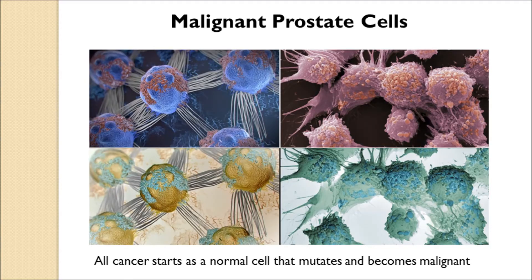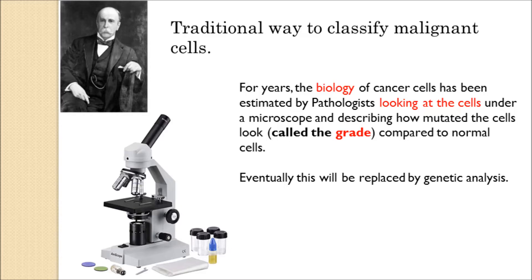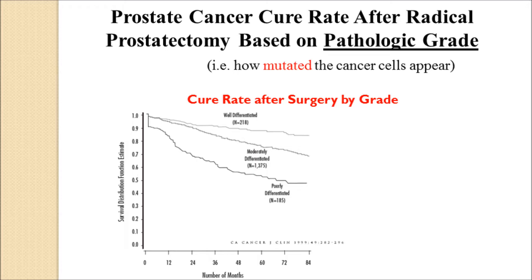All cancer starts as a normal cell that mutates and becomes malignant. The traditional way to classify malignant cells — the biology — was a pathologist looking at the cells under a microscope and describing how mutated they look compared to normal cells. This was called the grade. This will eventually be replaced by genetic or genomic analysis, but for now the grade is still commonly used.